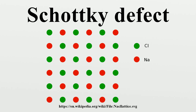Normally these defects will lead to a decrease in the density of the crystal. The following are the chemical equations in Kroger-Vink notation for the formation of Schottky defects in TiO2 and Al2O3. This can be illustrated schematically with a two-dimensional diagram of a sodium chloride crystal lattice.